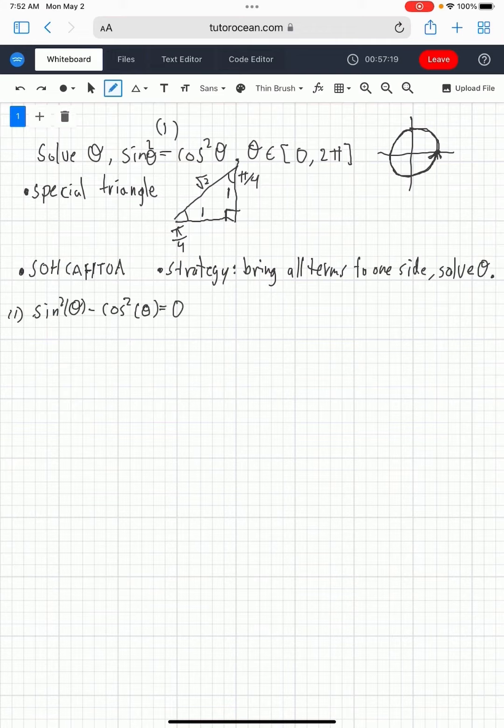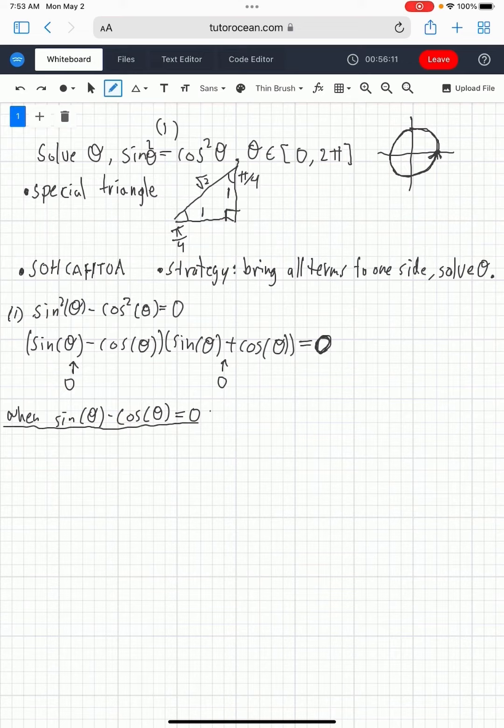So the strategy for this one is to bring all terms to one side and solve for theta. When you do that, you can factor it. And once you factor it, you will know the conditions that need to be true. So the first term has to be 0 or the second term has to be 0.